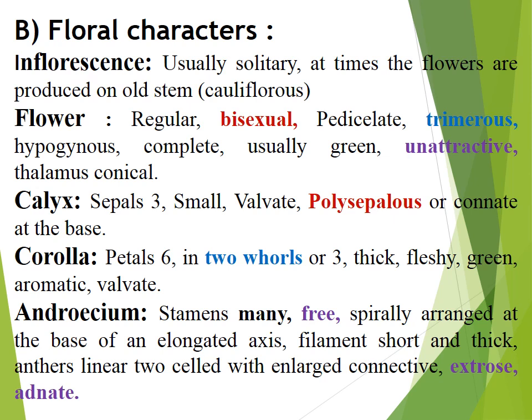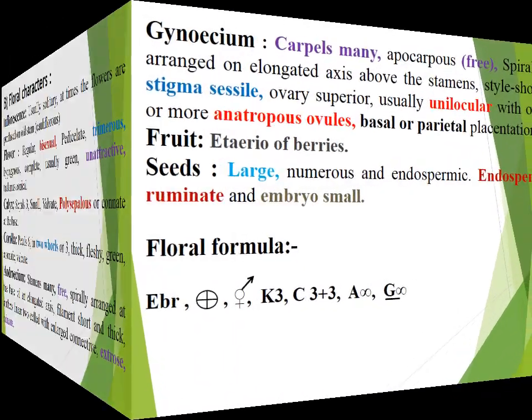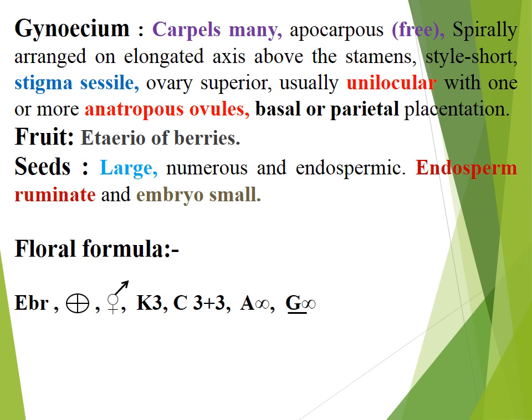Androecium: Stamens many, free, spirally arranged at the base of the elongated axis. Filaments short and thick. Anthers linear, two-celled, with enlarged connective, extrorse, adnate. Gynoecium: Carpels many, apocarpous, free, spirally arranged on elongated axis. Style short. Stigma sessile. Ovary superior, usually unilocular.